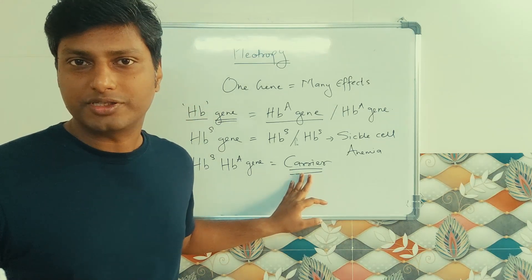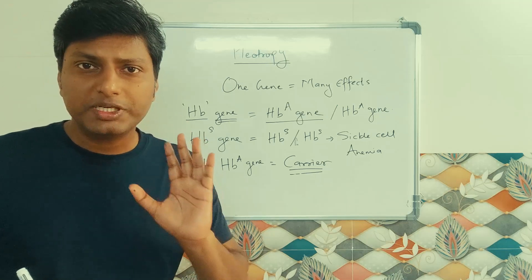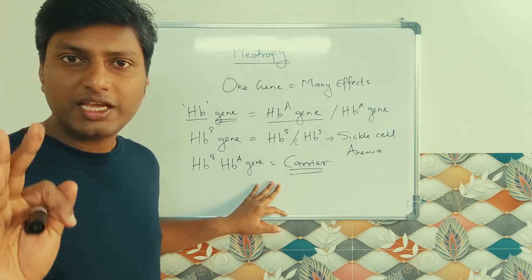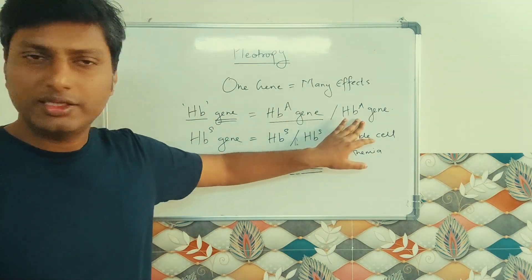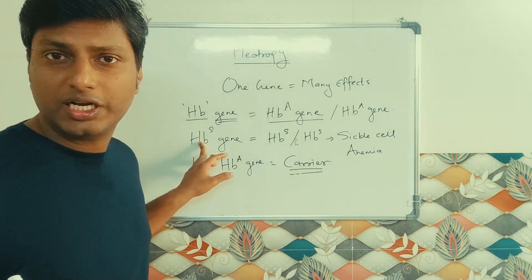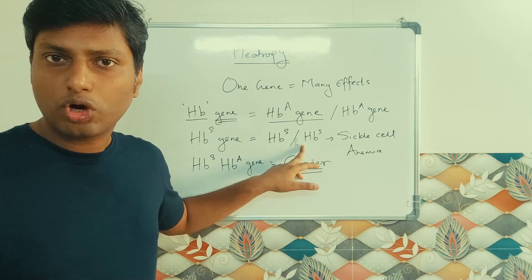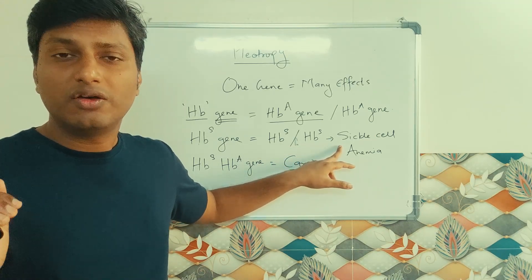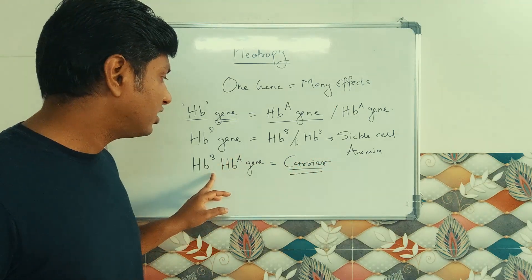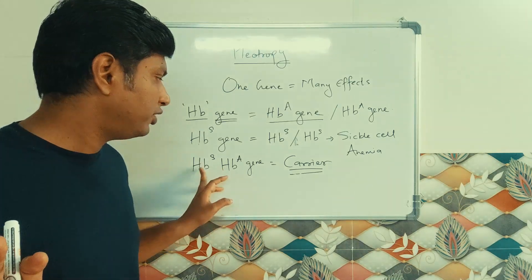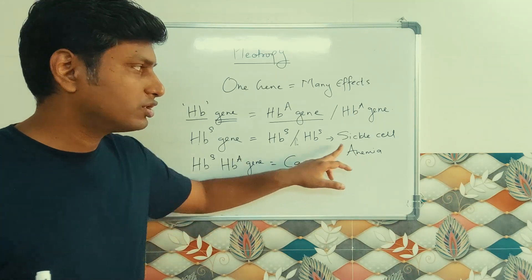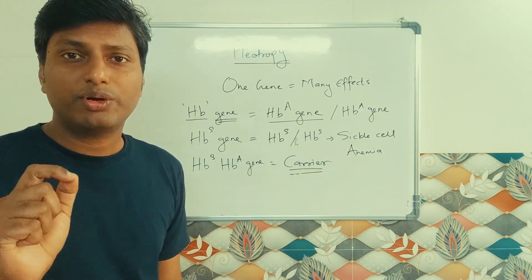So pleiotropy means a single gene — the hemoglobin gene — shows multiple effects. Precisely three effects: first, in a normal state the person is healthy; second, if the gene undergoes mutation and both copies are HbS, the person suffers from sickle cell anemia, which is a lethal condition; and third, if there is one normal HbA gene and one HbS gene, the person is a carrier who is normal but may show symptoms under certain conditions.